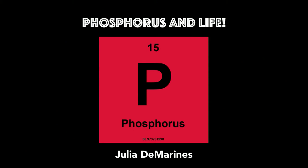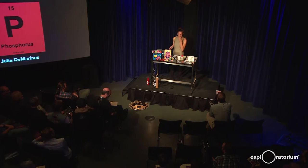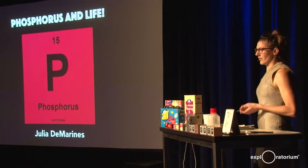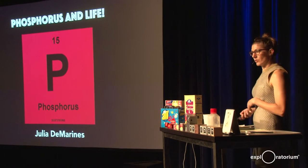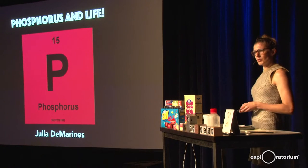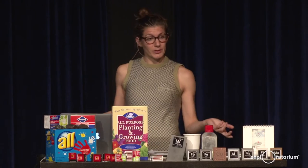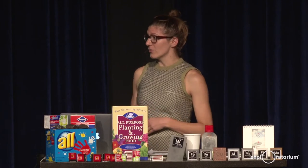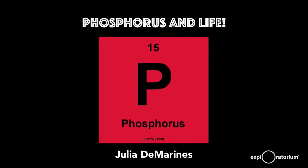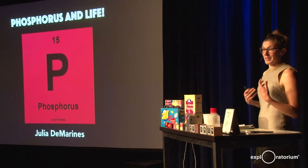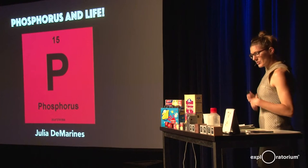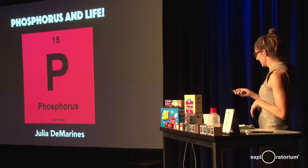As an astrobiologist, we look for life in the universe, and we want to know how life uses elements to sustain itself and to maybe form on other planetary bodies. Where in the solar system and where in the universe should we look for life? Using elements is a really good way to look — where are the elements required for life, and where are they not? So these are some of the things I'll be talking about today.